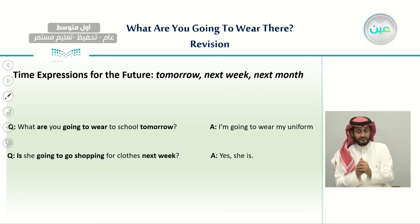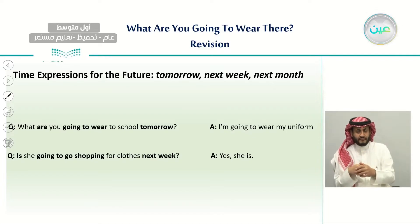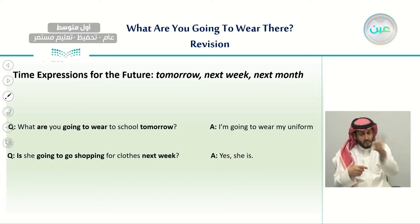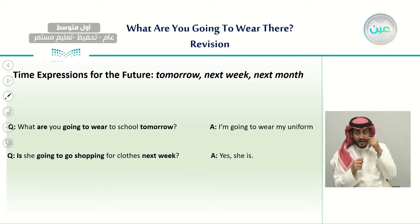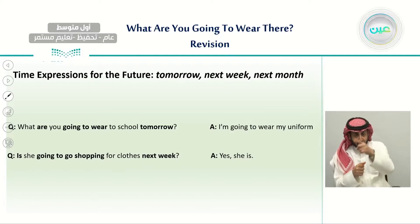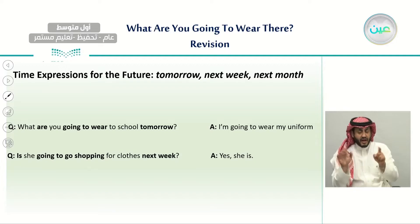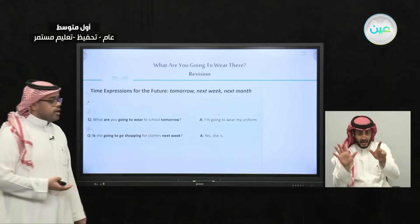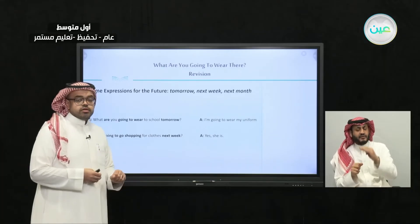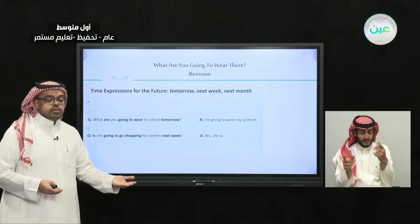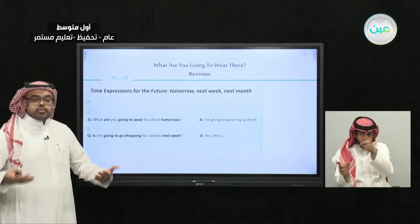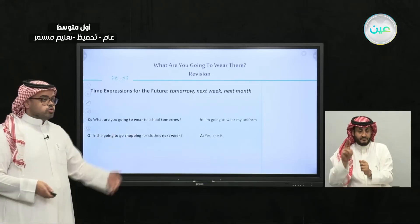For example: 'What are you going to wear to school tomorrow?' Here 'going to wear' indicates the future, and 'tomorrow' is a time expression. Answer: 'I am going to wear my uniform.' Another example: 'Is she going to go shopping for clothes next week?' — 'Yes, she is.' So we can use 'going to' with time expressions to talk about the future.